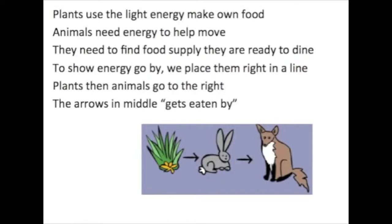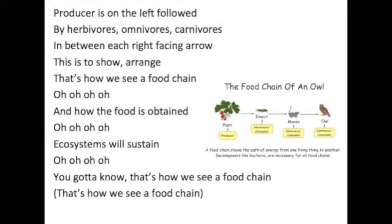Plants use the light energy, make own food. Animals need energy to help move. They need to find food supply, they are ready to dine, to show energy go by — we place them right in a line. Plants and animals go to the right. The arrows show what gets eaten by what. Producers are on the left, followed by herbivores, then carnivores. That's how we see our food chain.